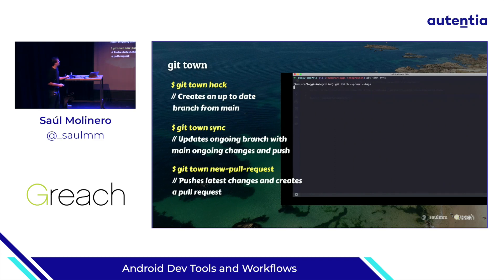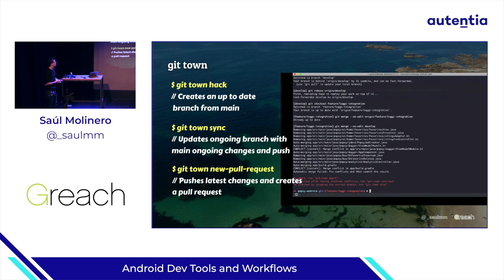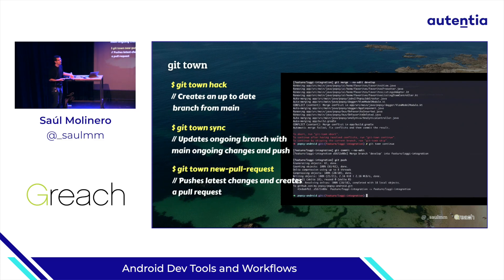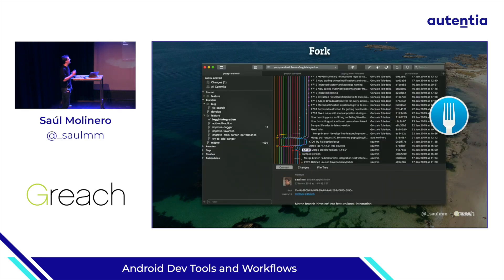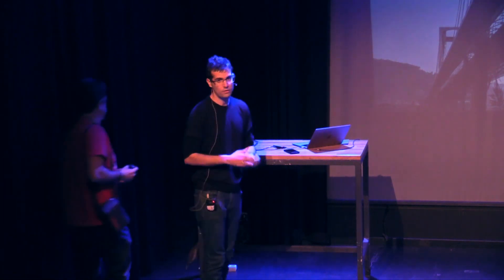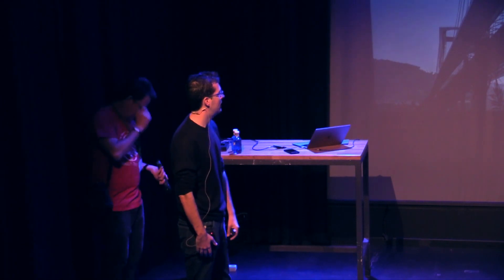Another interesting tool I use is Git Town, which automates common Git flow tasks. For example, if someone has merged to develop while I'm on a feature branch, running 'git town sync' will go to develop, fetch, pull, merge develop into my branch, and then push my branch. And when things go crazy with Git, I use Fork — a Git GUI client. That's all I have. If you have questions, you can reach me on Twitter. Thank you for your attention.